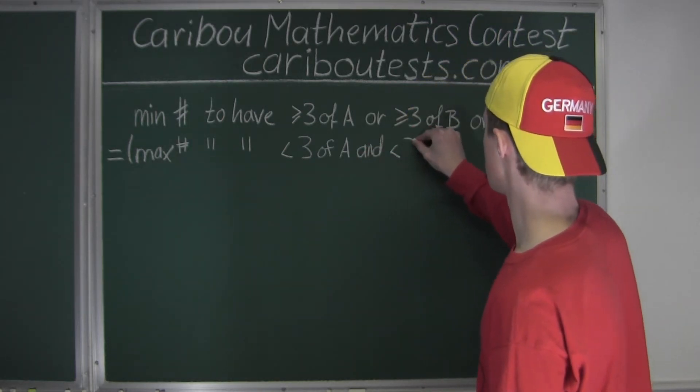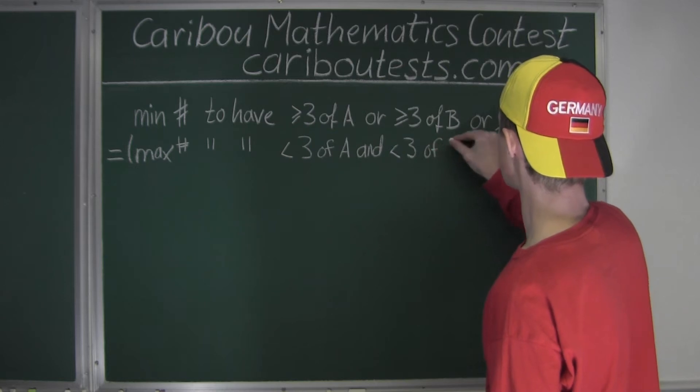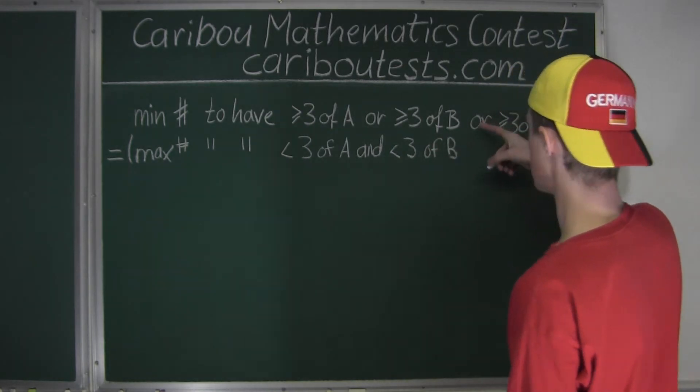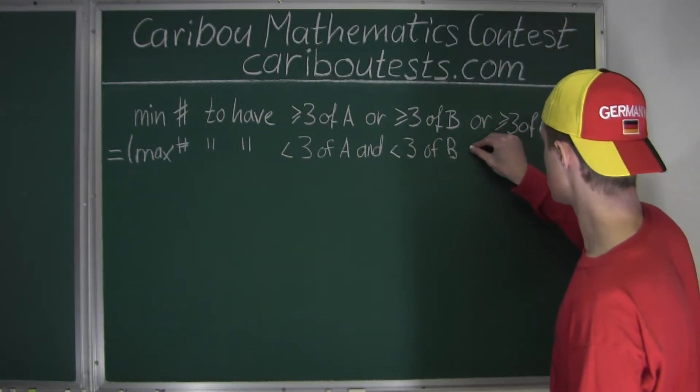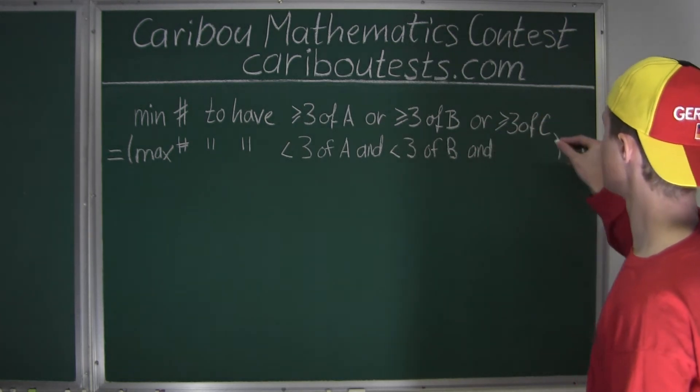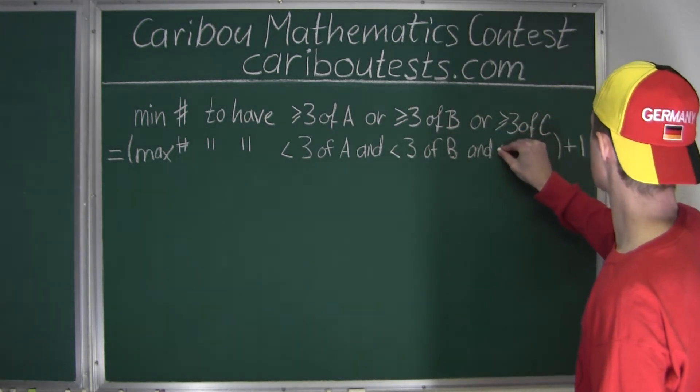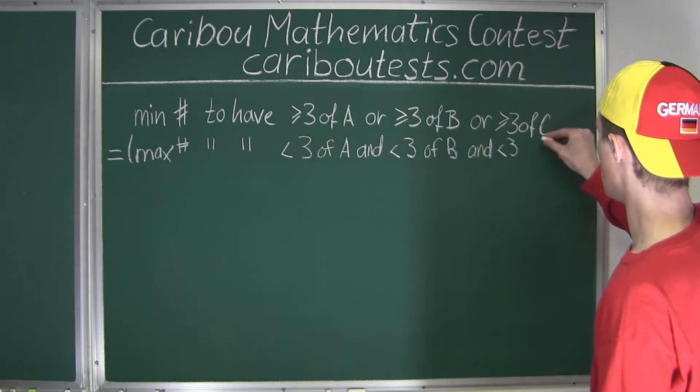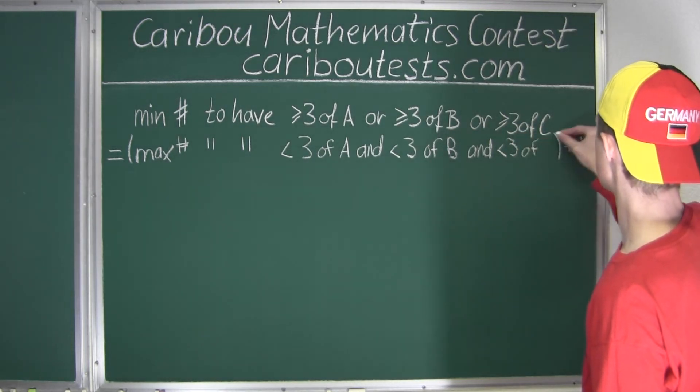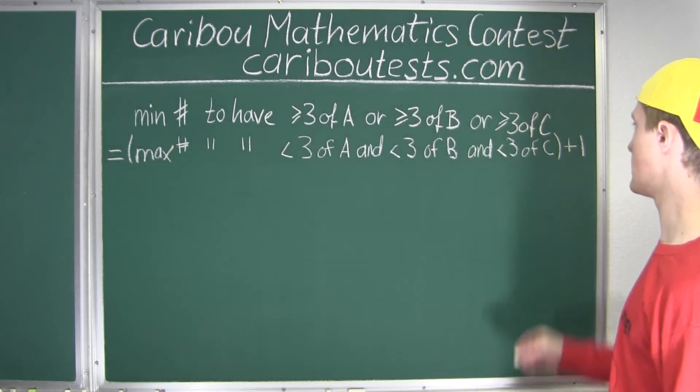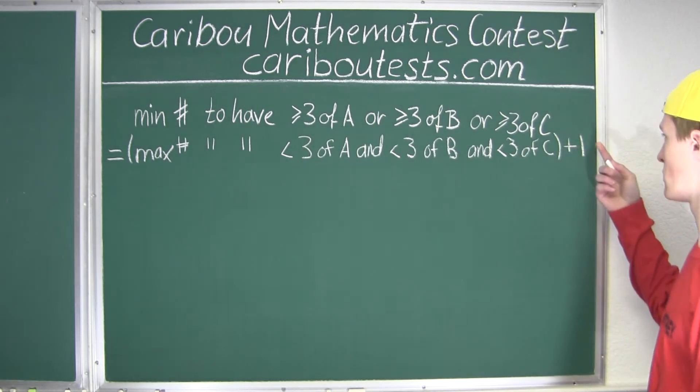Less than three of A and less than three of B—and then we replace OR with an AND—less than three of type C. Okay, and then we still have the plus one at the end.